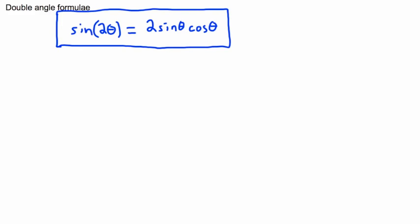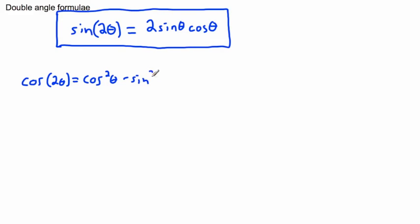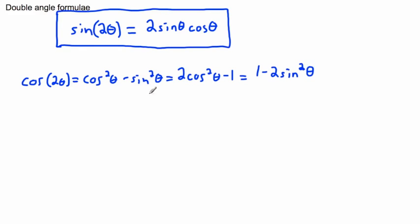For cosine, however, there are a few formulas. So for cosine of two theta, we have a couple of them. One says cosine squared theta minus sine squared theta. We also have another one: two cosine squared theta minus one. And we also have another one that says one minus two sine squared theta. So there are a few ways of looking at it.